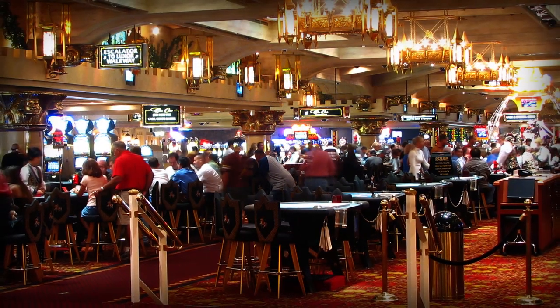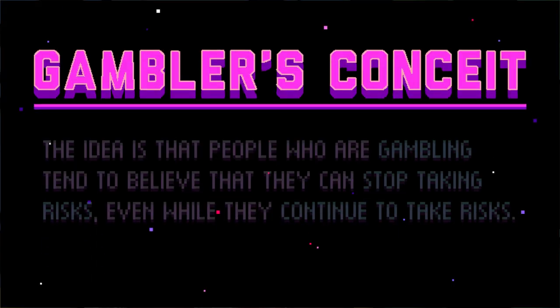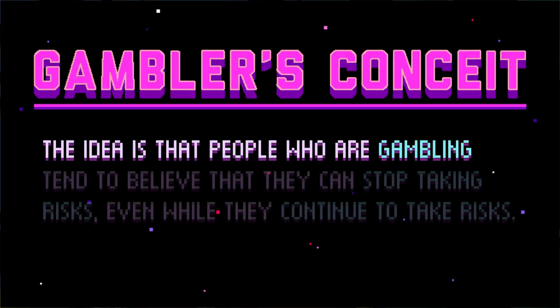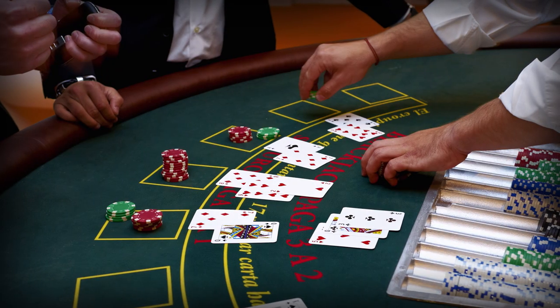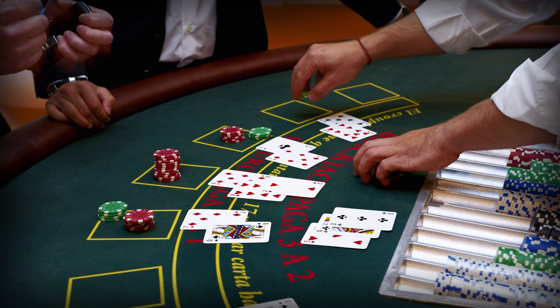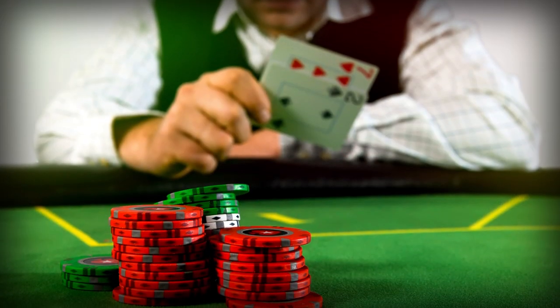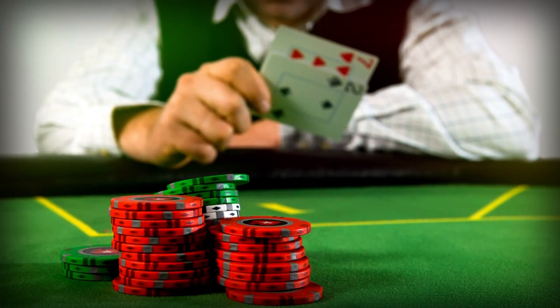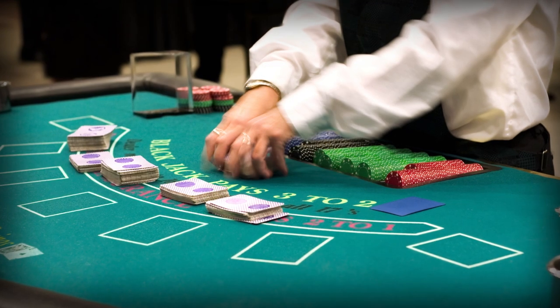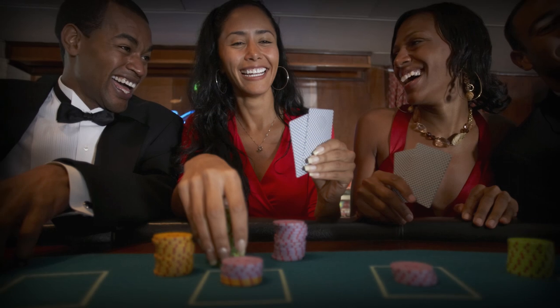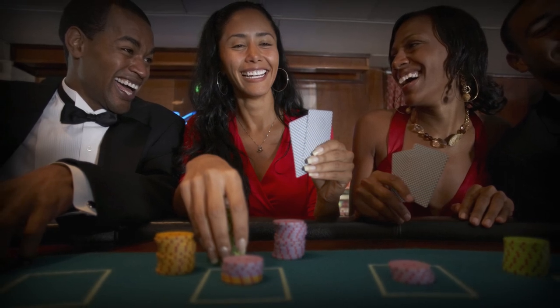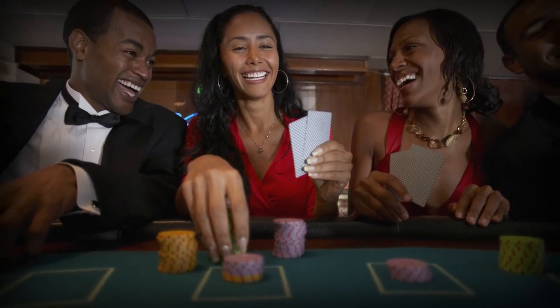What accounts for all those other gamblers? It turns out there are a couple of ways that people tend to think that keep them at the casinos. Behavioral economist David Ewing identified one mechanic as the gambler's conceit — the idea that people who are gambling tend to believe that they can stop taking risks even while they continue to take risks. A person sitting at a blackjack table having lost hundreds of dollars can very often convince themselves that they'll quit as soon as they win their money back. That doesn't often work as planned. The games are designed so that the house has an advantage, and the player is, in aggregate, unlikely to win those losses back. But the player is also unlikely to quit if they do win the money back — they have little incentive to quit while they're winning.